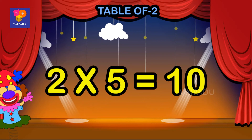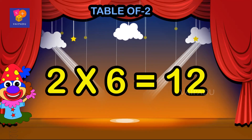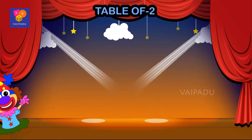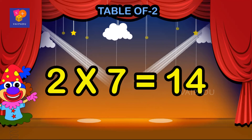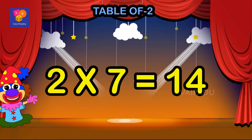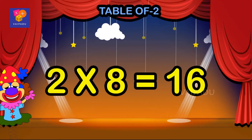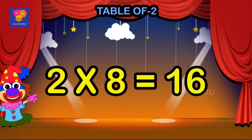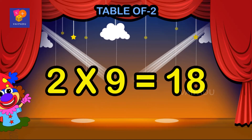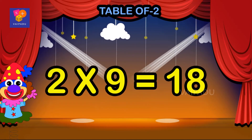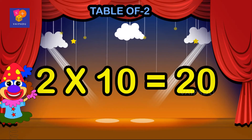Two sixes are twelve, two sevens are fourteen, two eights are sixteen, two nines are eighteen, two tens are twenty.